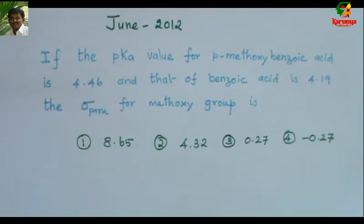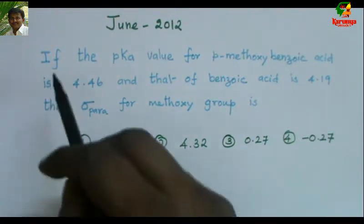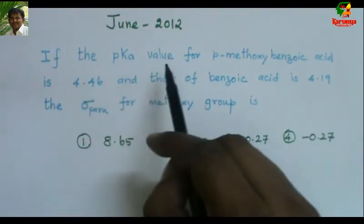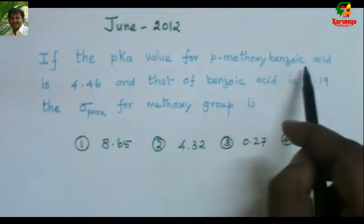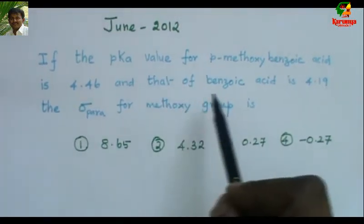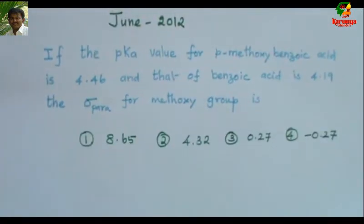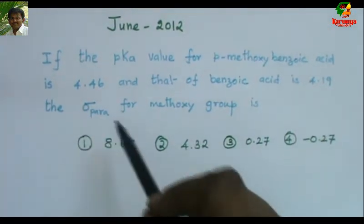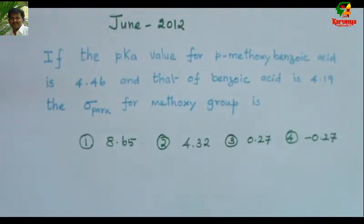Today I am going to solve a problem on Hammett equation and its application. You can find this problem in CSIR NET exam 2012. The problem is: if the pKa value for para-methoxy benzoic acid is 4.46 and that of benzoic acid is 4.19, the sigma para for the methoxy group is blank.